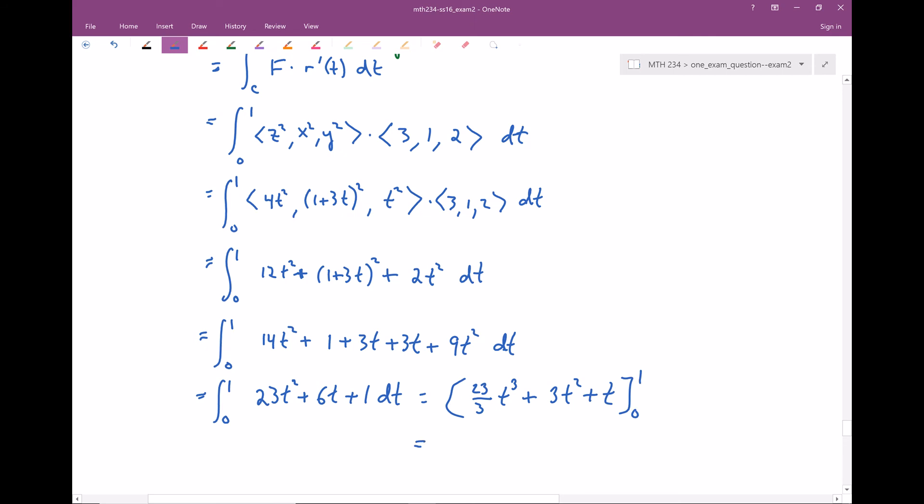When I plug in zero, I would just get out zero. When I plug in one, I'm gonna get 23 thirds, plus three. I'll go ahead and write three as nine thirds, plus one. Which I'll go ahead and write as three thirds. So let's go ahead and add this all up. So 23 plus nine, that's gonna be 32, plus another three, that's gonna be 35 thirds. So all together, I get the result of 35 thirds. Alright, so there's a good 16-2 problem for you. I hope you guys enjoyed. I'll see you next time in 16-3.